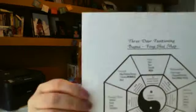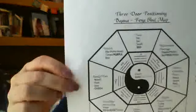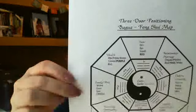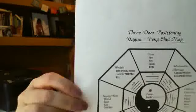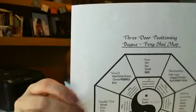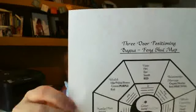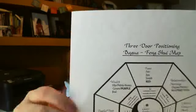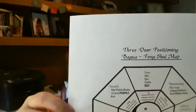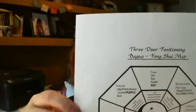These eight areas require a point of reference in order to lay the map correctly. Most maps have a north, east, west, south point of reference. This Bagua's point of reference is the architectural entryway or door into a space — meaning the door that was intended to be the entryway.